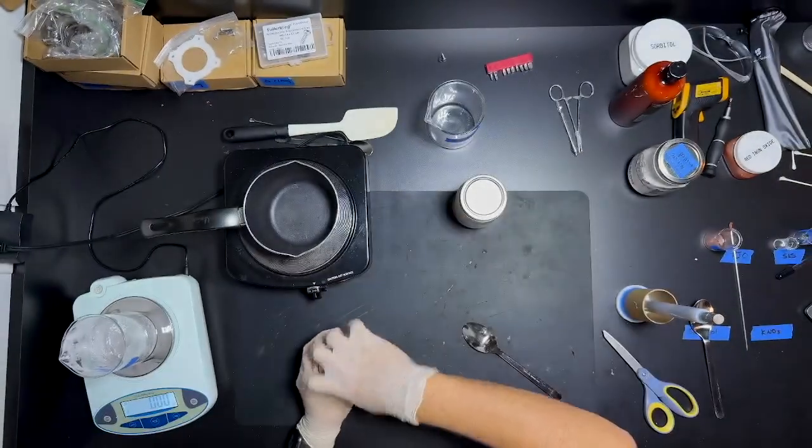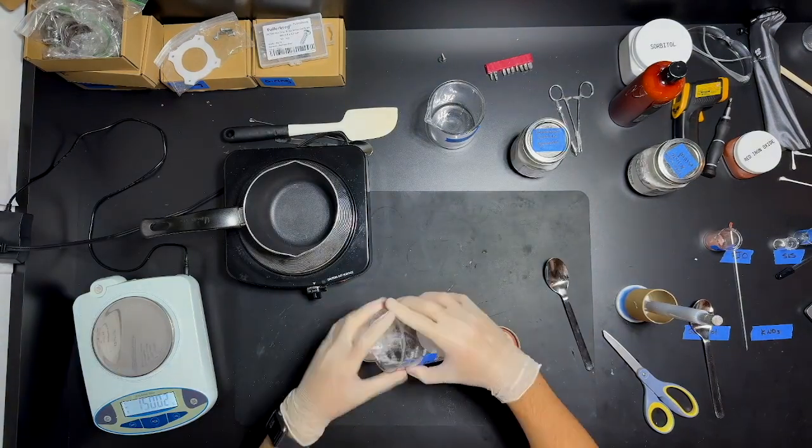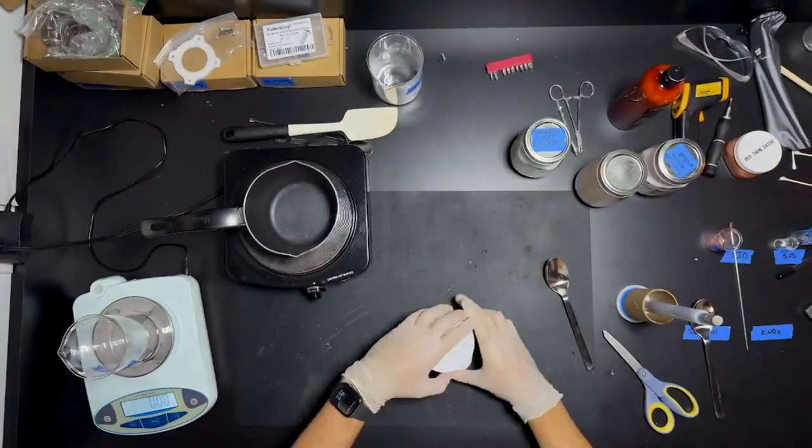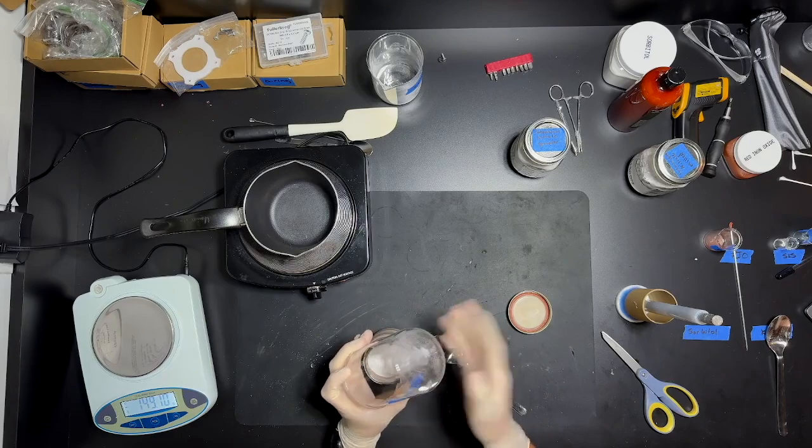And then I measure out the granular potassium nitrate. And then I also add to the mason jar for mixing. After both potassium nitrates, I have the sorbitol. This is the fuel of the propellant. And I mix it up and add that to the mason jar.